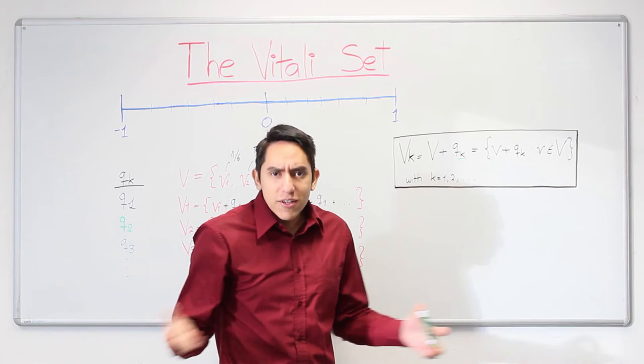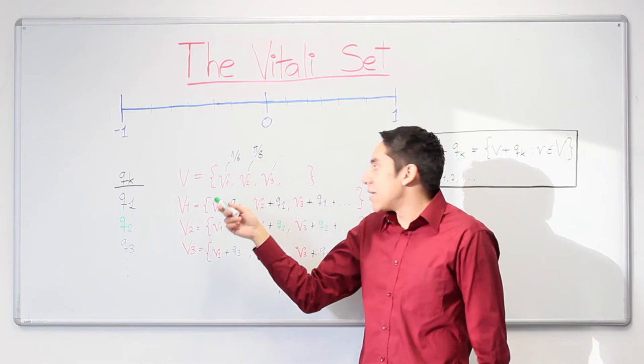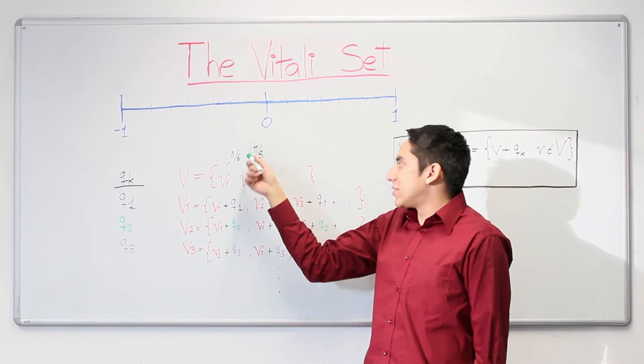And make it a little bit more understandable. Here we have our Vitali set, which contains the elements V_1, V_2, V_3, and so on. As we saw in the example before, it was 1 over 6, pi over 8, and so on.